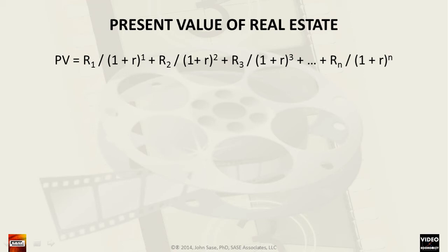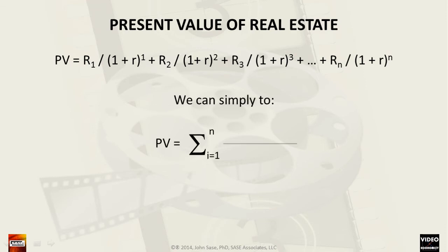This value that is greater than 1 is the sum of 1 plus the discount rate, which is expected to be greater than 0. For simplicity, we assume that the expected rate of return will remain constant over subsequent years. Therefore, we can reduce the somewhat lengthy equation into a summation format, in which the present value of the stream of income equals the annual rental income divided by the quantity of 1 plus the rate of return taken to successively larger powers.